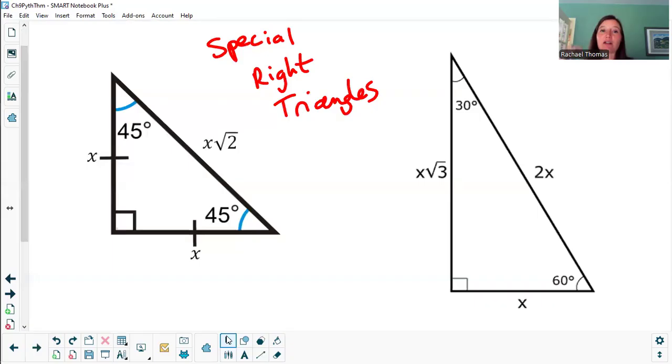In a 45-45-90 right triangle, x, x, x root 2. In a 30-60-90 triangle, x, 2x, and x root 3.